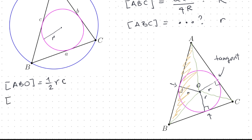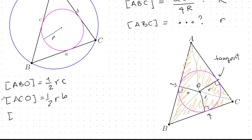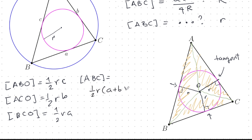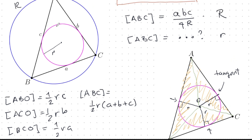The area of triangle ABO = (1/2)·r·c, since the height is r and the base AB = c. The area of triangle ACO = (1/2)·r·b. The area of triangle BCO = (1/2)·r·a. So the total area of triangle ABC = (1/2)·r·(a + b + c).